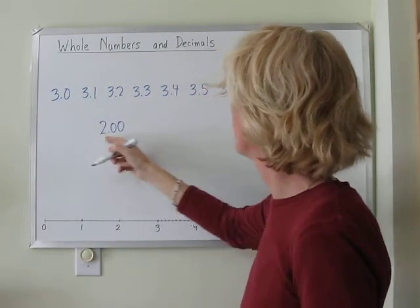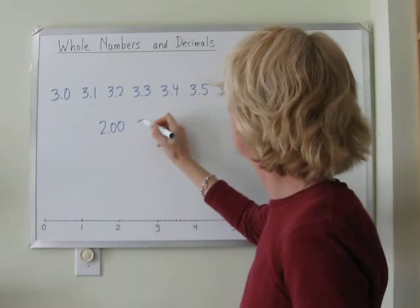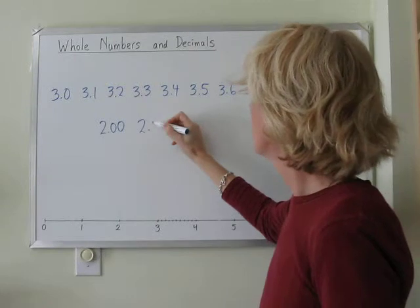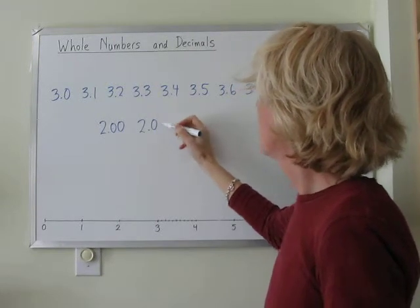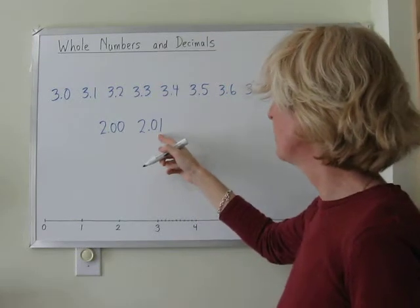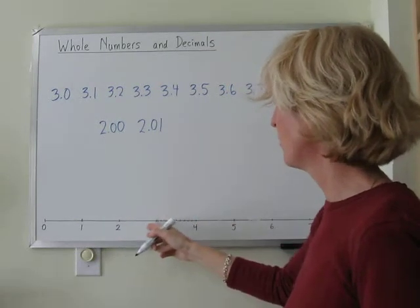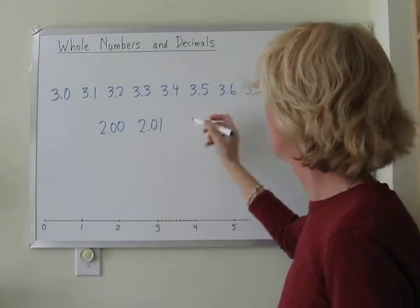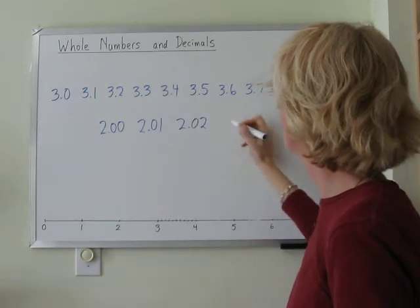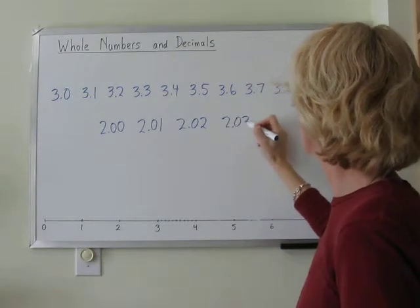The little ant would start at two, and the next step would be two point zero one. Because this is hundreds, and we're going to have like one hundred steps to get from two to three, and then it would be two point zero two, two point zero three,